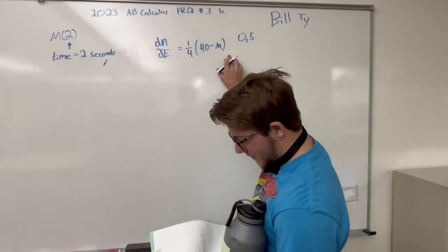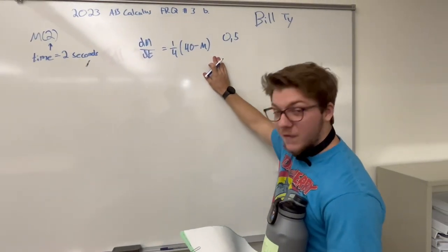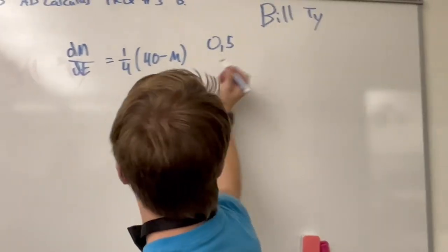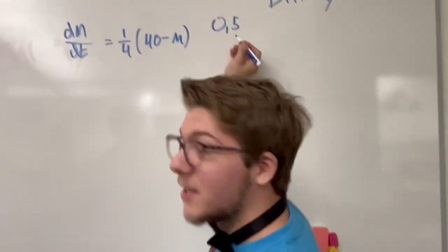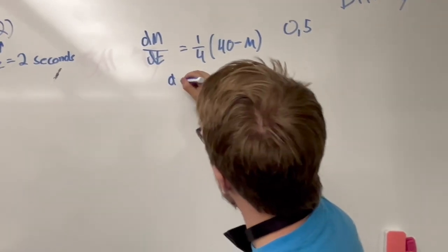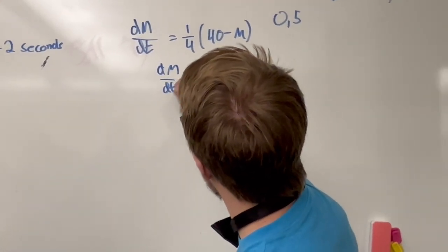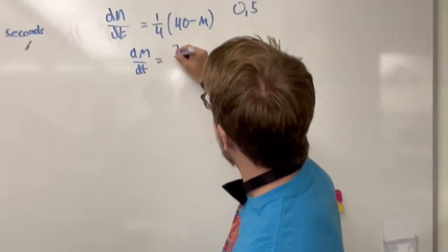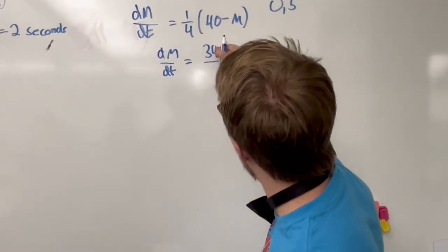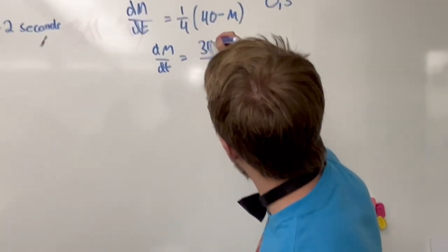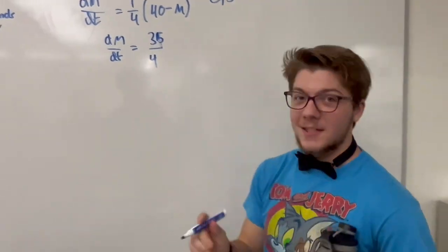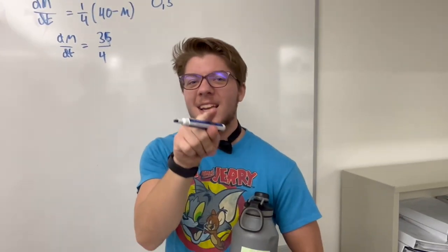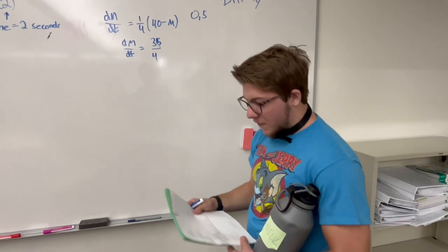From here, we are going to find the slope at the given time of t equals 0. We simply plug in 5 for m and we get dm/dt. After some solving, we get 35 fourths. Bill Tye does not make mistakes, unless they are calculating mistakes.